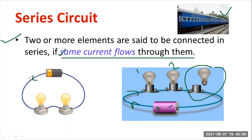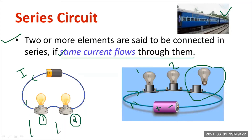Current will be passing from positive to negative. Both bulbs are in series, so the same current flowing through lamp one is equal to the current flowing through lamp two. But the voltage across each lamp depends on the resistance value of the bulb.